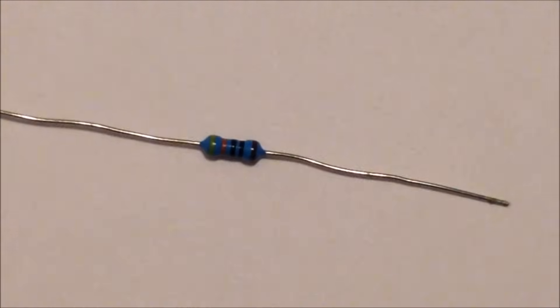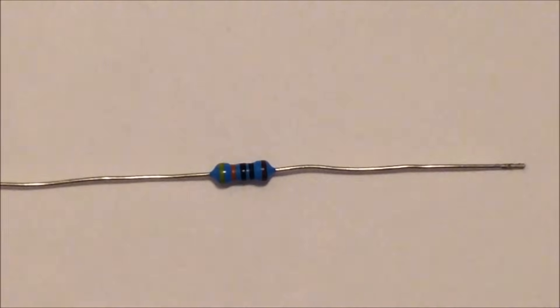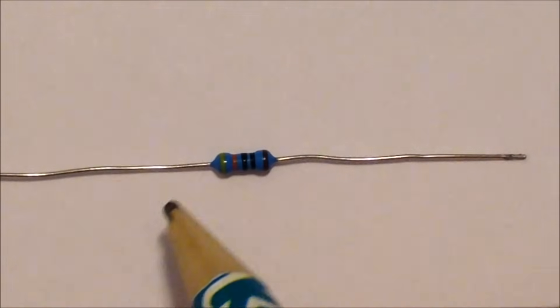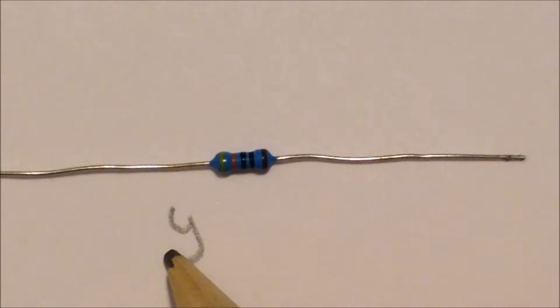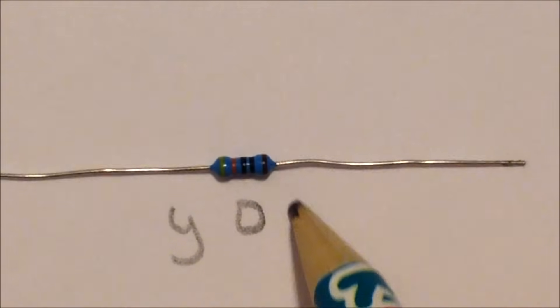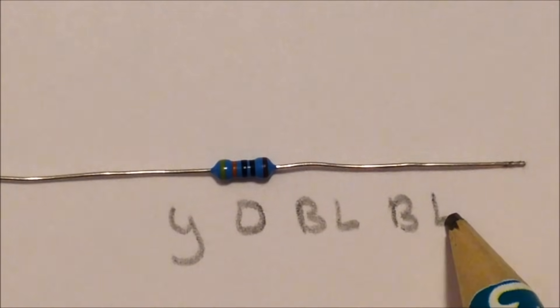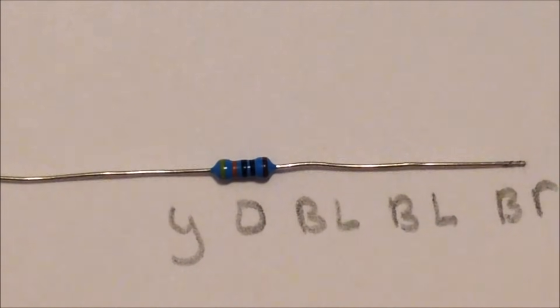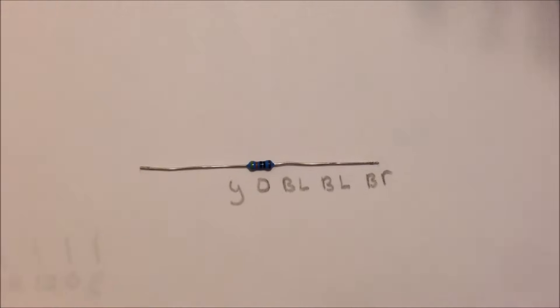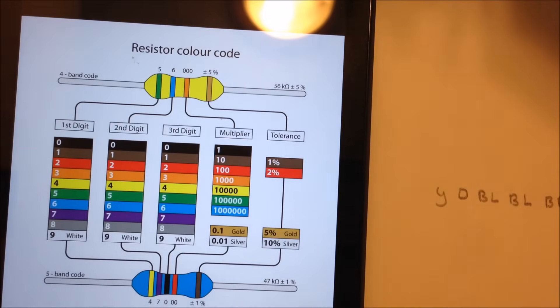All right. We'll test one more resistor, and the one we're going to test now, this guy here, actually has five bands on it. So we'll just break down the colors here first. So starting over here on the left side, we have yellow, and then we have orange, and then black, black, and brown.